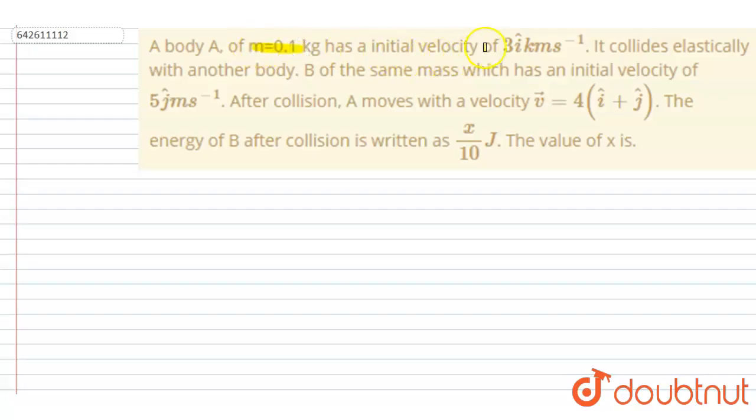0.1 kg has initial velocity of 3 i cap m/s, and it collides elastically with another body B of same mass which has a velocity 5 j cap m/s. After collision, A moves with a velocity you can see here.